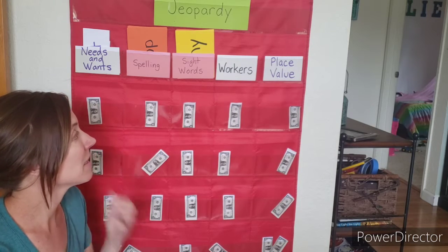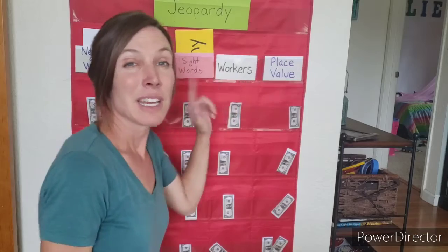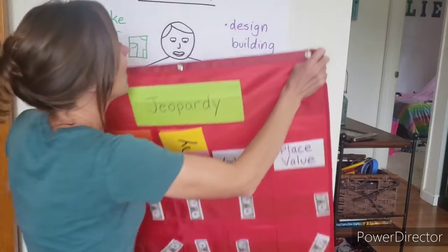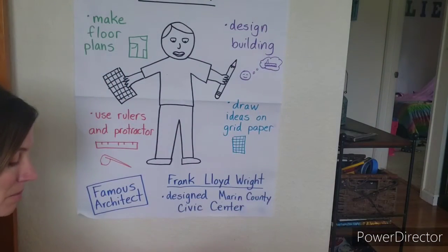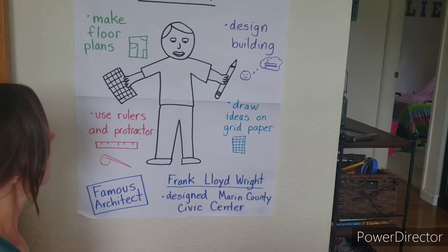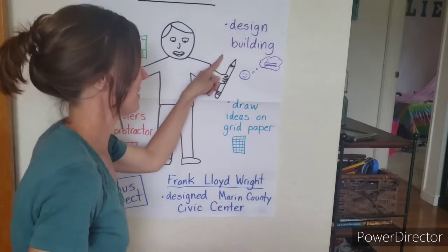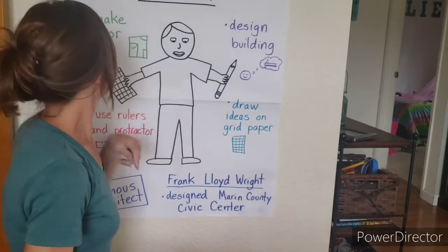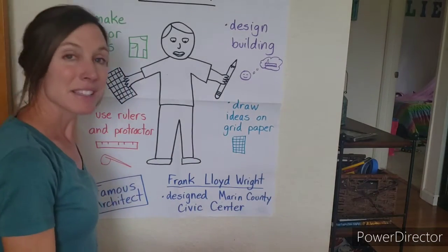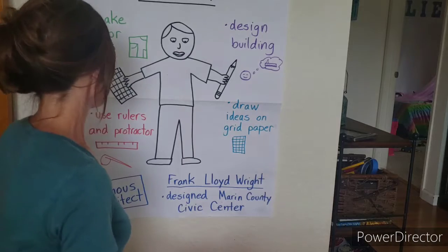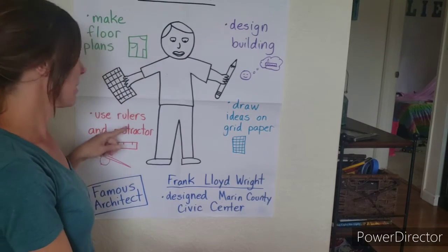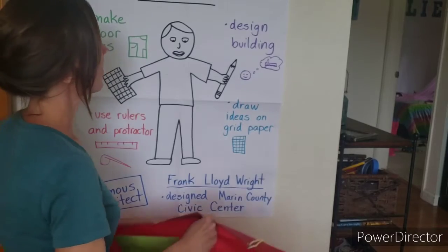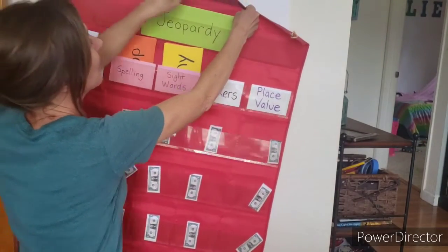The first thing we're gonna do is Workers, and before we go over Workers I want to remind you of the architect. Remember that an architect designs buildings, draws ideas on grid paper, makes floor plans, and designs the inside and the layout. Some of the tools that they use are rulers and a protractor, so that might help you with some of the questions that will be coming up.